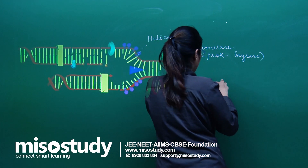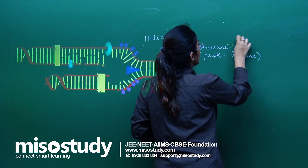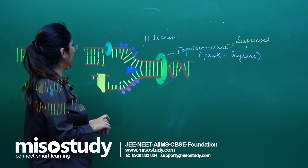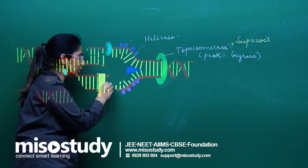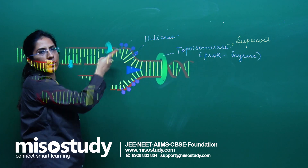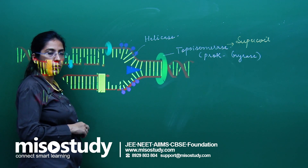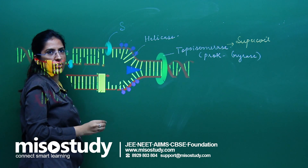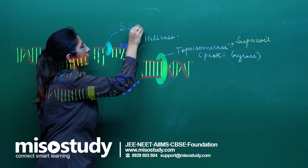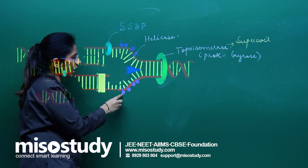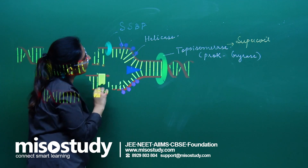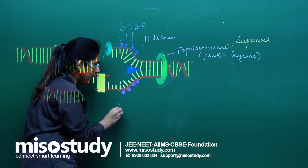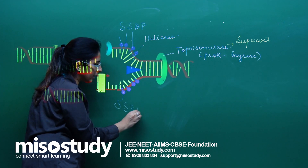Topoisomerase introduces a negative supercoil to relieve tension. Because the separated nucleotides are complementary to those above, there is a chance they will rebind. To stabilize the single strands, we use single-strand binding proteins (SSBPs), which are added to both strands.